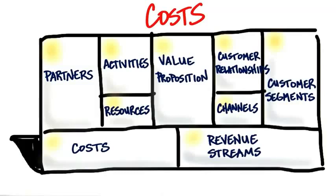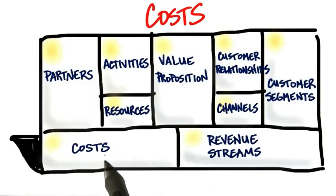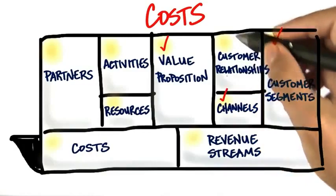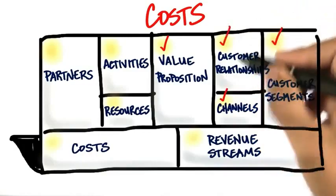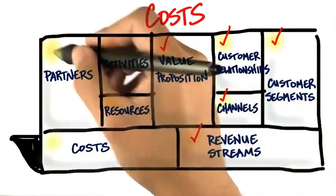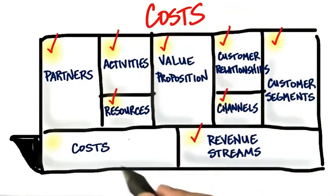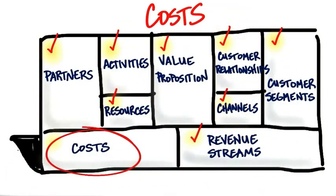So now we finally come to the last part of the business model canvas. We've talked about value props and customer segments and channels and customer relationships and revenue streams and partners and resources and activities. And now we get to cost structure. And it's kind of ironic — we're getting to the last part of the business model canvas that could actually put us out of business.